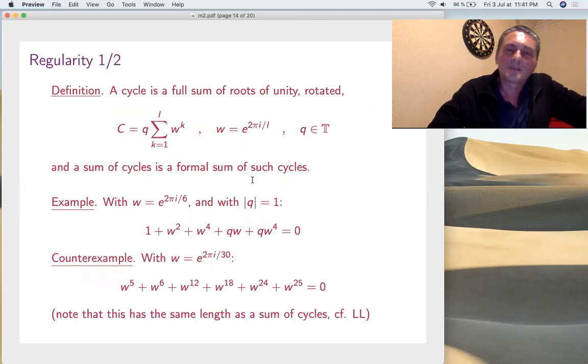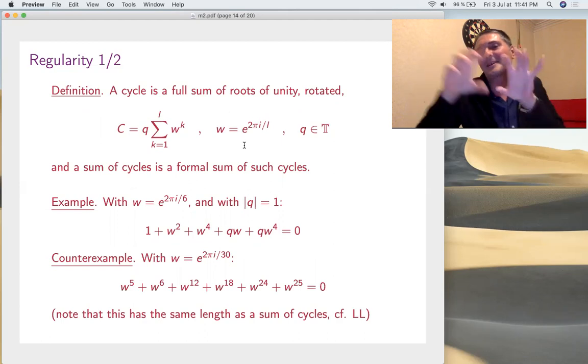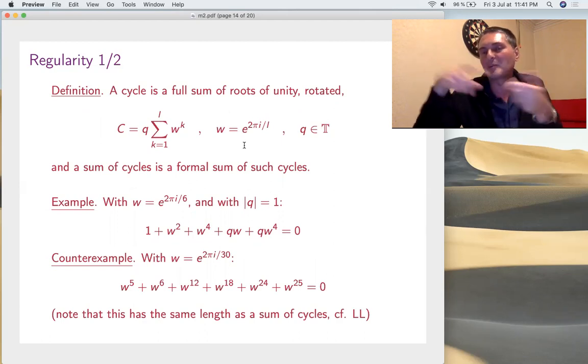Now, once again, in relation to roots of unity, but now, getting back to classification, let's try to do something at 6, at n is 6, and also 7. Let's call a cycle any full sum of roots of unity, which might be rotated. It's a trivial vanishing thing, and more generally, we can take several things like that and take the formal sum. These are trivial vanishing things.